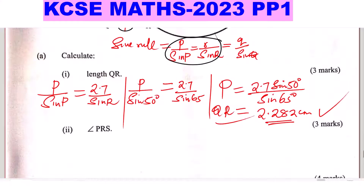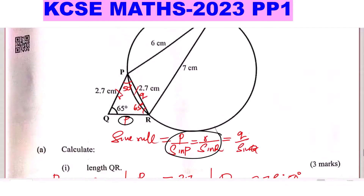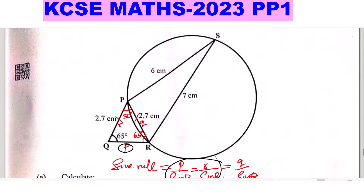Part 2: find angle PRS. Looking at the diagram, consider triangle PRS. You are given all three sides: PS is 6, SR is 7, and PR is 2.7. To find that angle, we can use the cosine rule.